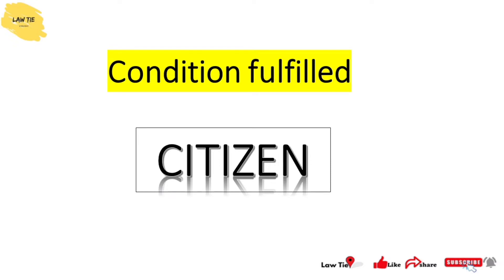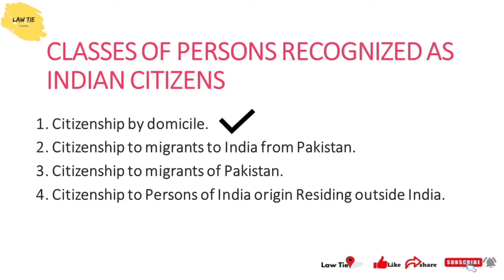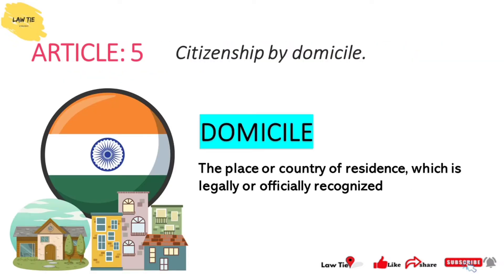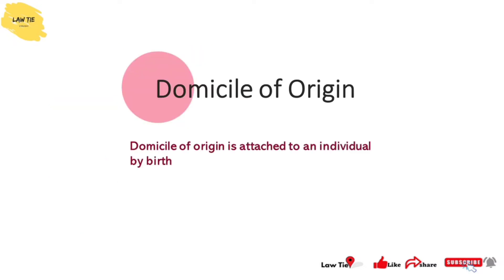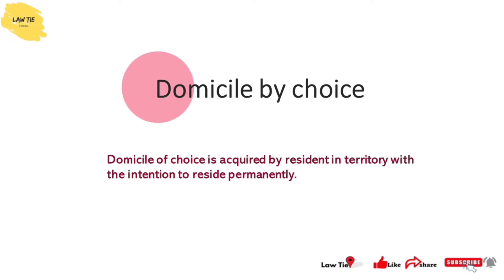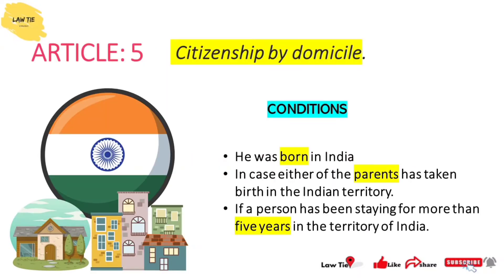The first provision is citizenship by domicile. Domicile means the state where we reside permanently. There are two types: domicile of origin, which is attached by birth, and domicile of choice, which means a person can acquire and reside in that territory.